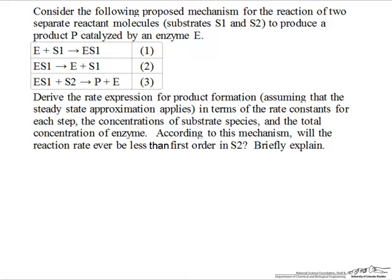We have an enzyme that reacts with substrate one to produce enzyme-substrate complex number one, and then this can either come back apart to reform the free enzyme and S1, or it can react with a second substrate molecule to produce a product molecule and then the free enzyme.